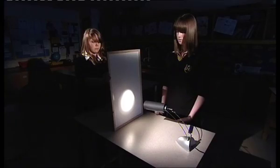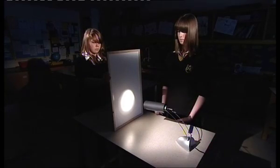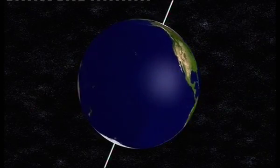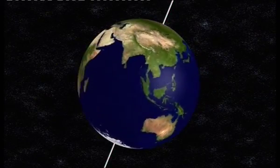Here's a simple demonstration that can help show how the intensity of light varies with the angle of inclination. This is the reason why it's hotter near the equator and colder near the poles.